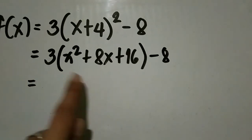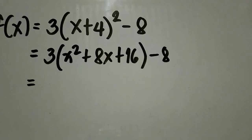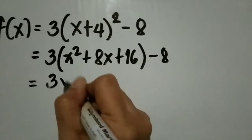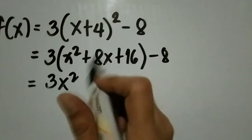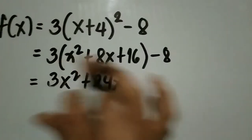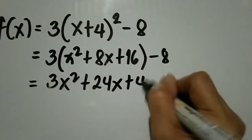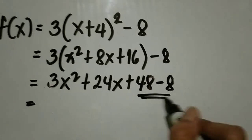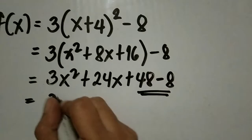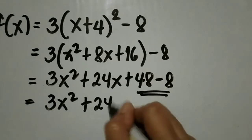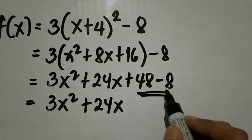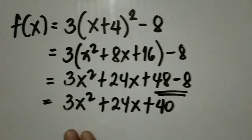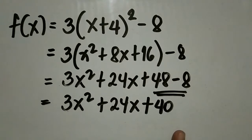Distributive property naman — kung meron tayong number outside the quantity: 3 times x² is 3x², 3 times 8x is 24x, and 3 times 16 is 48. Then copy yung negative 8. Combine natin ito dahil like terms sila: we have 3x² + 24x, then 48 minus 8 equals 40. So our final answer is 3x² + 24x + 40.